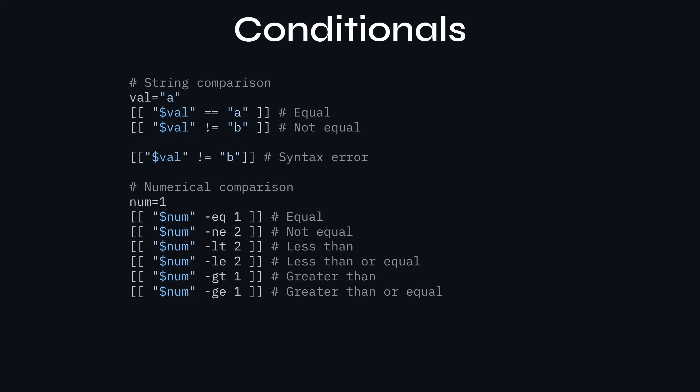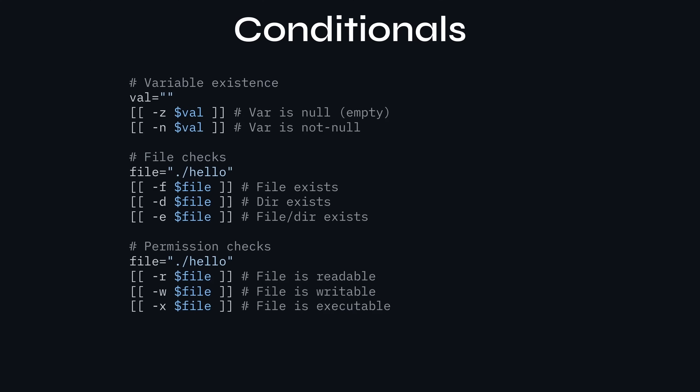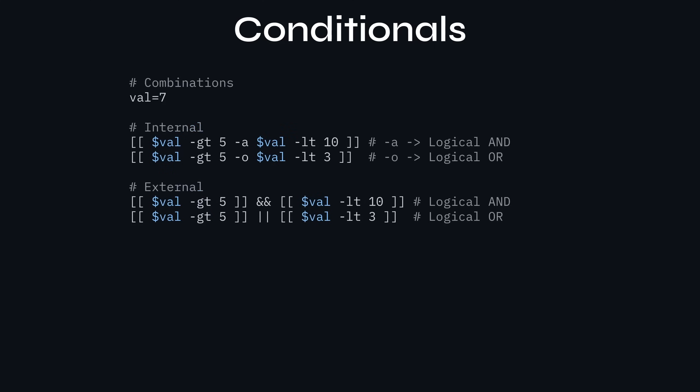Bash has a lot of built-in conditionals using a testing syntax with double square brackets. It uses a command-like syntax where you need spaces around everything — squishing things together gives a syntax error. You have string comparisons like double-equals or not-equals. For numerical comparisons you use shortcodes like -eq or -ne. There are also variable existence checks: -z to see if something is empty, -n to check it's not. You can check file existence and permissions. You can combine them with -a or -o for logical and/or internally, or externally with double-ampersand or double-pipe.